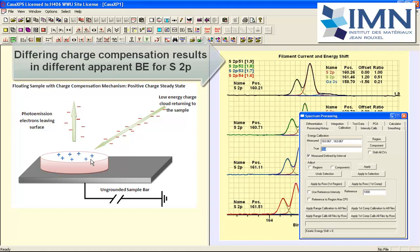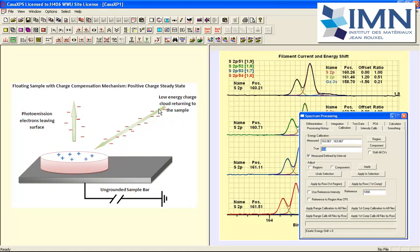Peaks would shift in binding energy. In order to measure from an insulating material we have to provide some compensation mechanism where electrons and also potentially positive charge is returned to the surface in order to maintain a balanced charge at the surface during the acquisition of a spectrum.